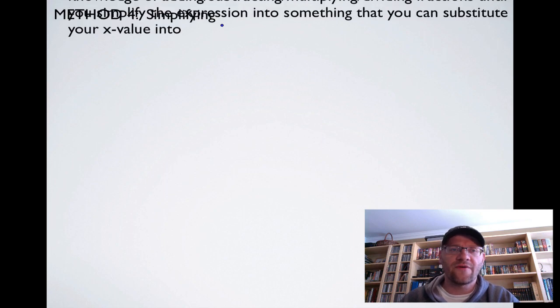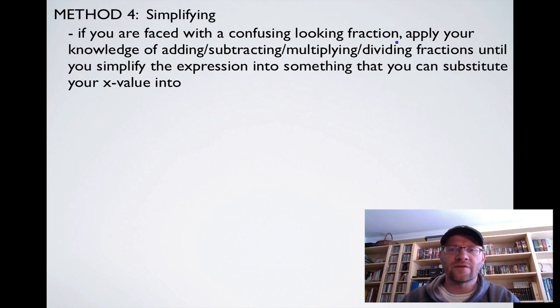Our fourth method is simplifying. If you're faced with a confusing looking fraction, apply your knowledge of adding, subtracting, multiplying, and dividing fractions until you simplify the expression into something that you can substitute your x value into. For example, I have the limit as x approaches 1 of (1 over x plus 1 minus 1 half) all divided by x minus 1. If I try to substitute in right away, I get a 0 in the bottom. So we can't do that. We're going to have to manipulate this thing.